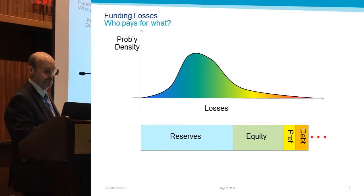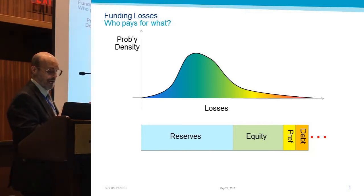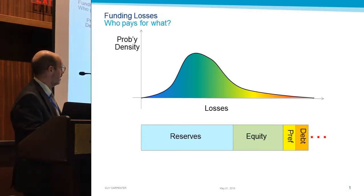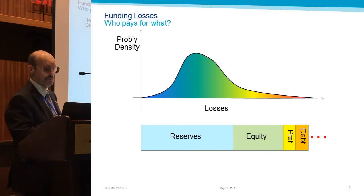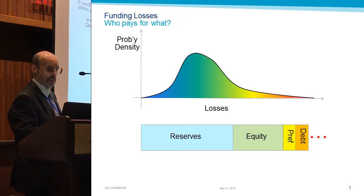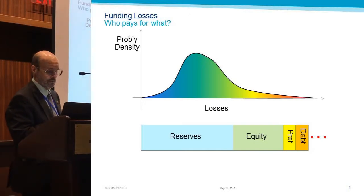We start out with the reserves in a multi-year model. Reserves would be looking backwards at previous years, and in a single-year model, we're really just talking about the premium that's collected to pay for the losses. And then if the losses turn out to be high enough, then we start tapping into the shareholder equity — they're going to have to lose some money that year to help pay for losses. And then eventually, if things really go south, they prefer shareholders.